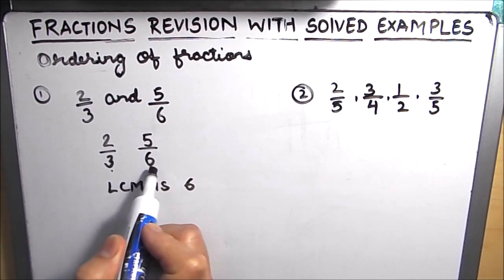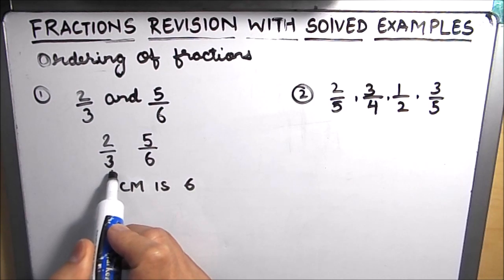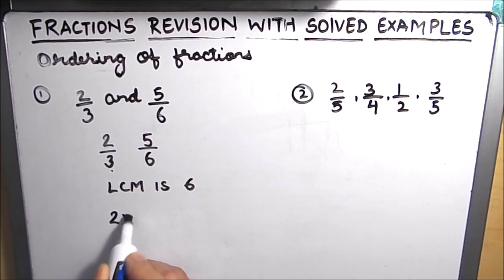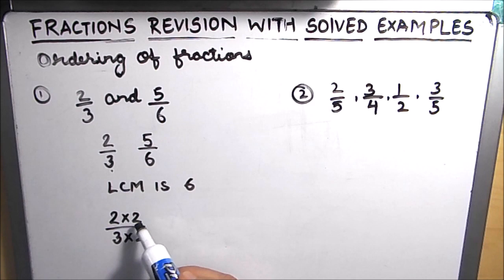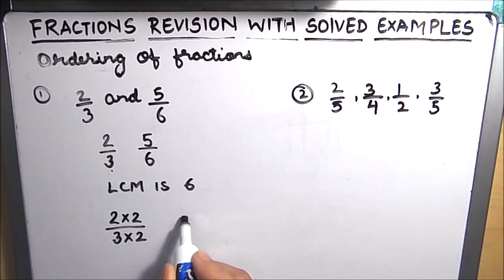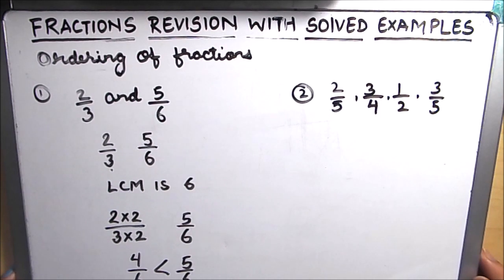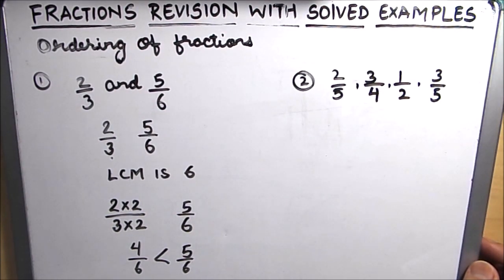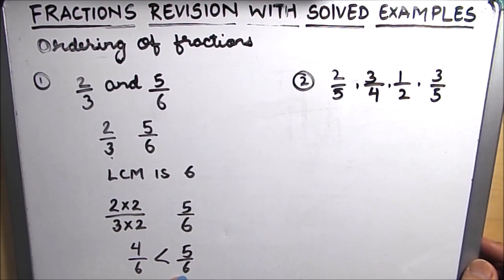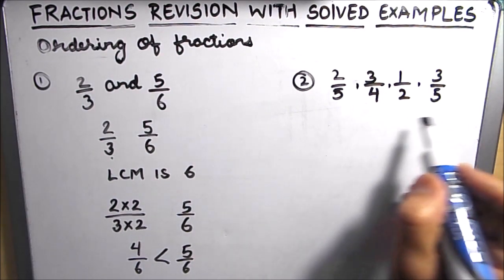To make the denominator of the first fraction equal to 6, we multiply both the numerator and denominator by 2, giving us 4 over 6. The other fraction remains 5 over 6. So 5 over 6 is bigger than 4 over 6. By making the denominator equal we can directly compare the two fractions — 4 parts out of 6 versus 5 parts out of 6, so 5 over 6 is the bigger fraction.